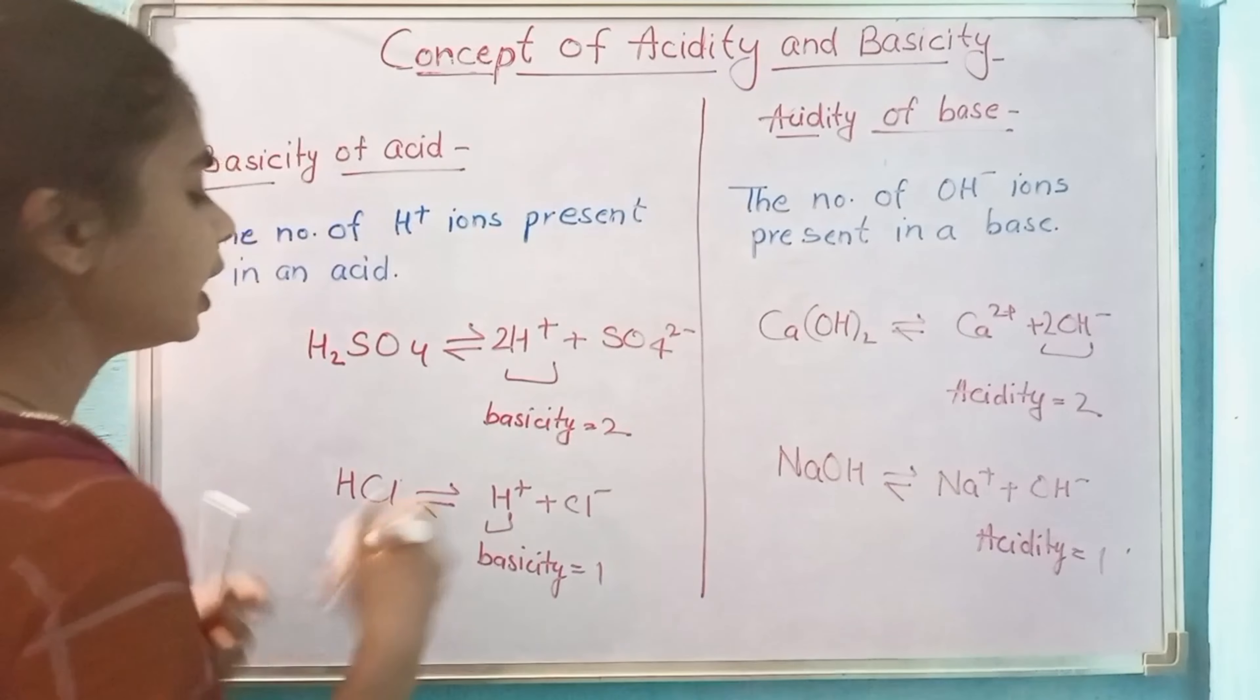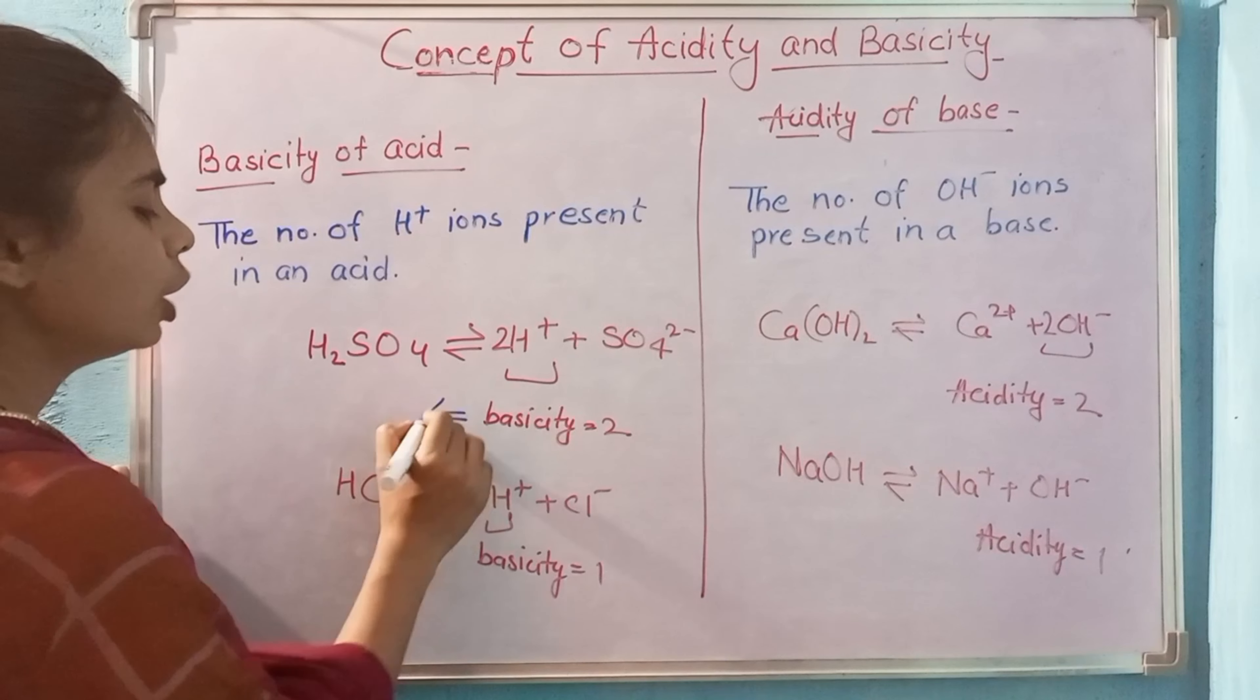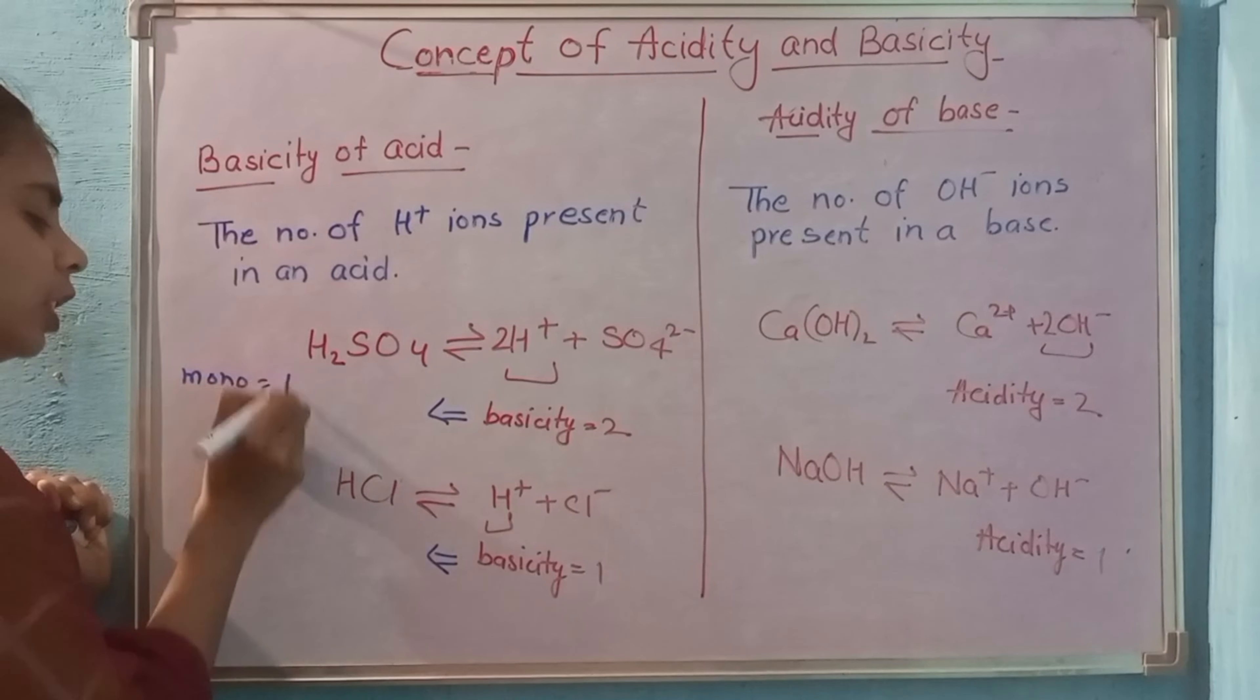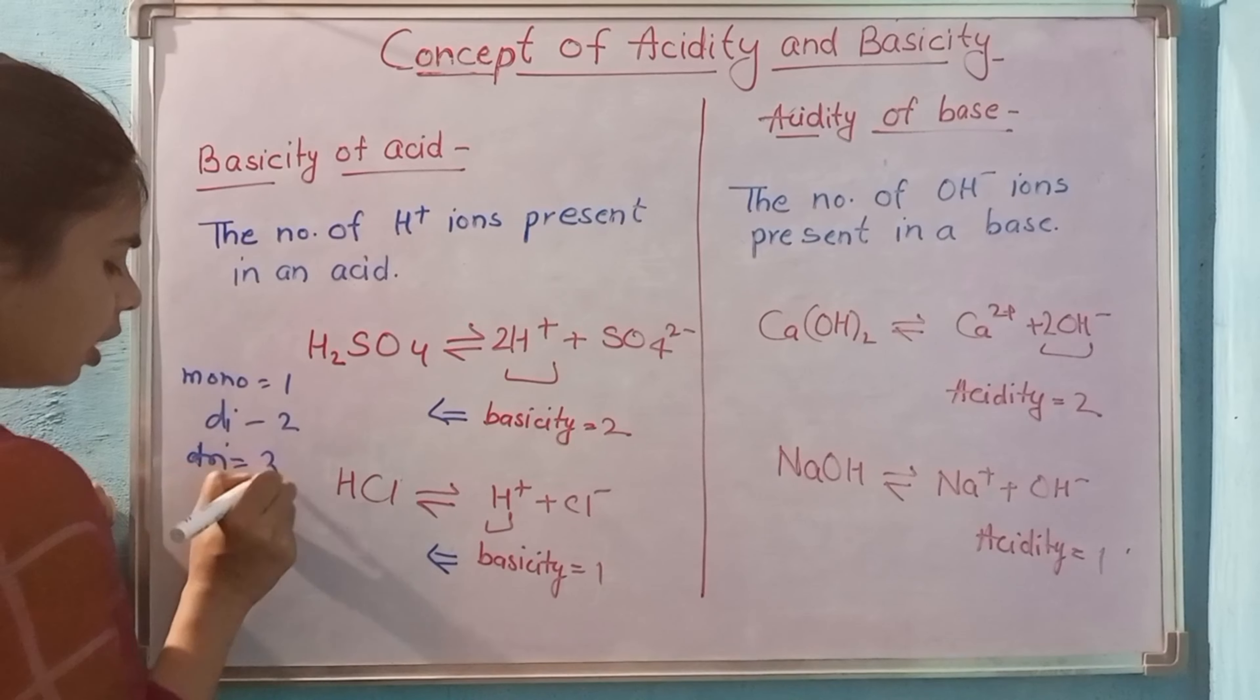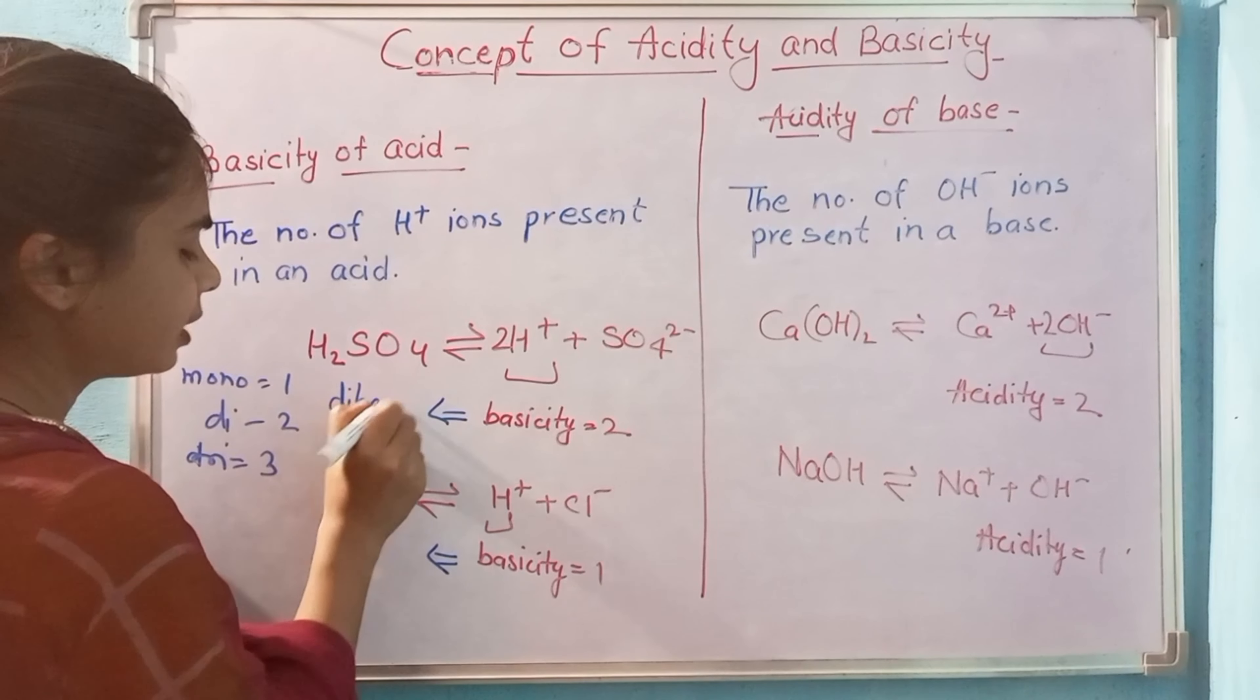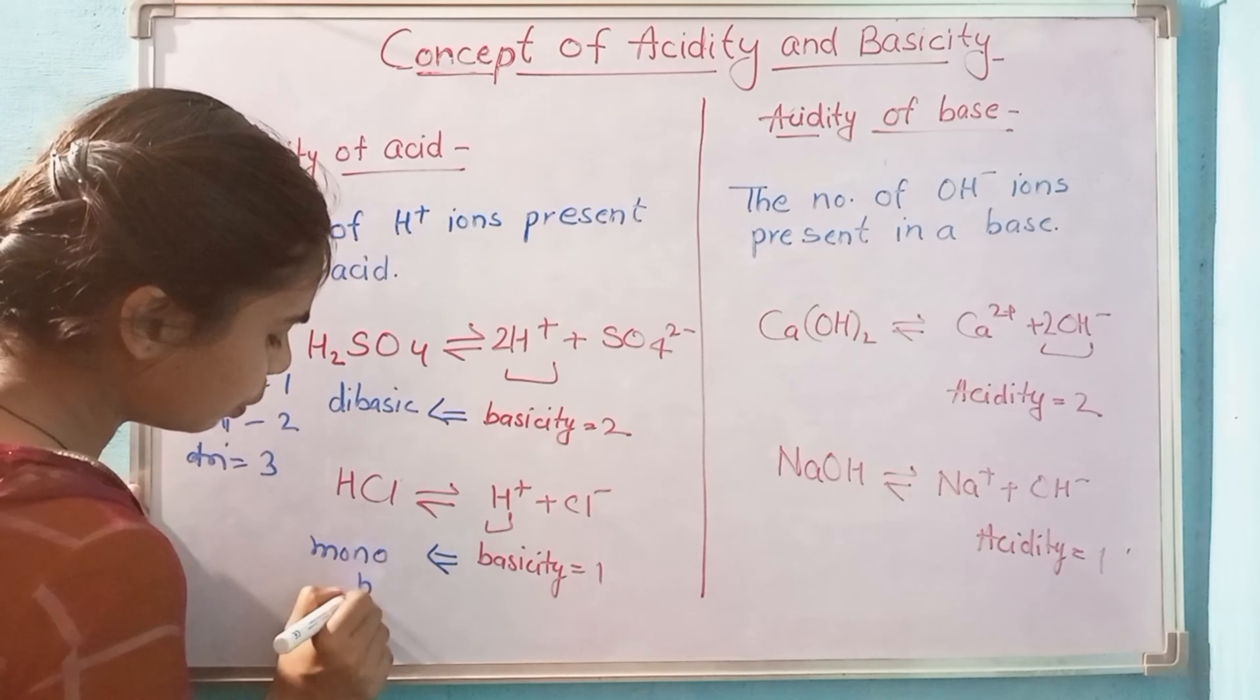Now we will know what we call 2 basicity and 1 basicity. We have studied how we have concept: mono means 1 and di means 2 and tri means 3. So whoever has basicity 2 will be called di-basic, and whoever has basicity 1 will be called mono-basic.